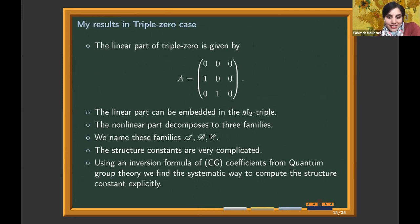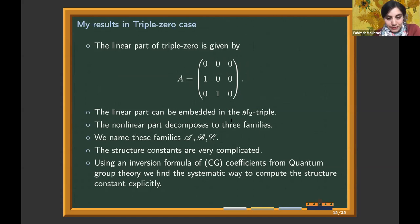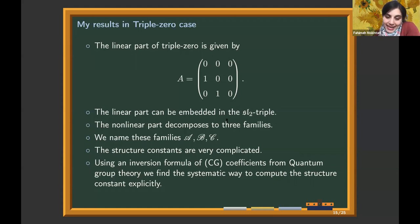About the triple zero singularity, which is very challenging: if the linear part of the system is the nilpotent matrix, we can embed this matrix into the SL2 triple. Using SL2 representation theory, we decompose the vector fields corresponding to the triple zero linear part into three families, which we name A, B, and C. For finding the normal form, we need to find structure constants — the Lie products between these vector fields — which are very complicated. To simplify, we use the Clebsch-Gordan coefficients from quantum group theory.